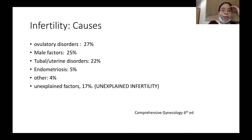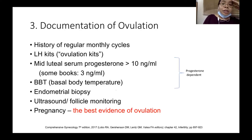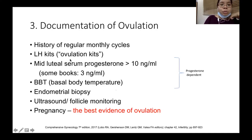The most common cause of infertility is anovulation, and the most common anovulatory condition is PCOS. One of the things you must document in infertility patients is ovulation. If the patient is having regular monthly cycles, then most likely she is ovulating.